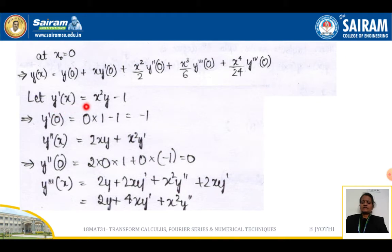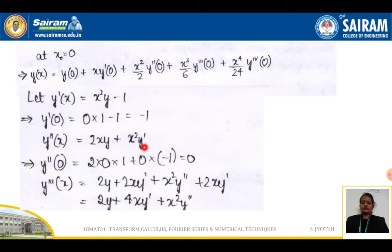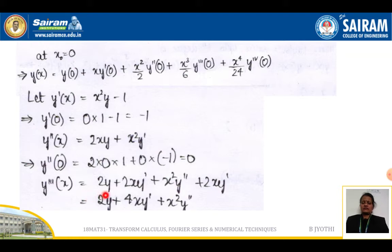Since y'(x) = x²y - 1, we compute y'(0) = 0·1 - 1 = -1. Next, differentiating y'(x) gives y''(x) = 2xy + x²y'. Therefore y''(0), substituting x = 0, y = 1, and y' = -1, gives 0 because x is multiplied in both terms.